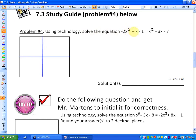We're going to use technology for this. Using technology, it says solve the equation -2x² + x - 1 = x² - 3x - 7. That's different than the previous lesson because in the previous lesson it always said equals 0, so we graphed a function and found the x-intercepts because that's where the y-value or the output is equal to 0.